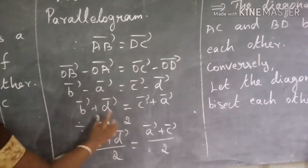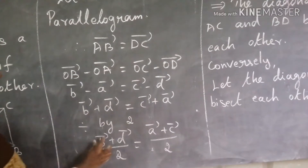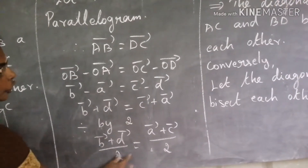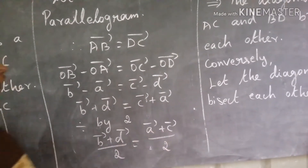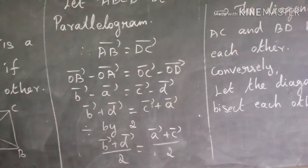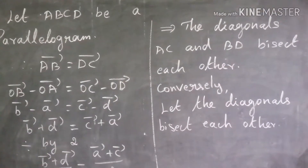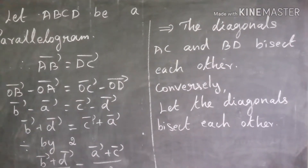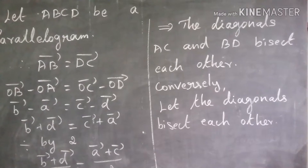This simplifies to: B plus D divided by 2 equals A plus C divided by 2, which implies the diagonals AC and BD bisect each other.